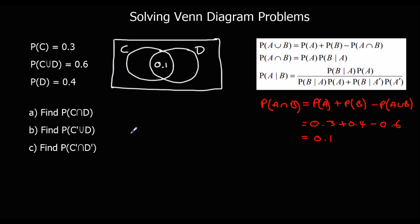Now we can fill out the rest of the Venn diagram. P(C) is 0.3; we know the middle is 0.1, so we need another 0.2. P(D) is 0.4; we've got 0.1, so we need another 0.3. All of this adds up to 0.6, which means the outside must be 0.4.